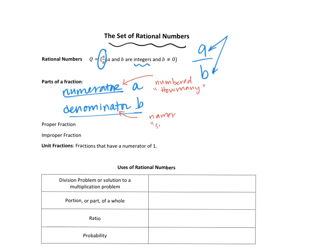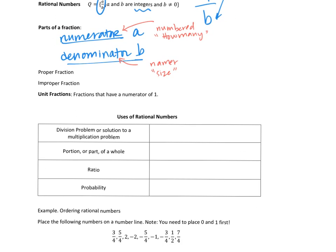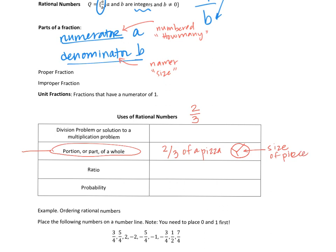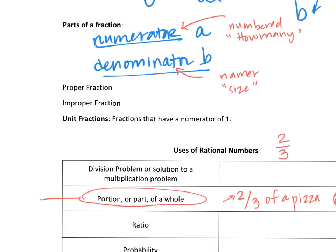The denominator is really telling us the size of our pieces, because we're going to talk about fractions in two different ways. One of them is as parts of a whole. So if we see the fraction two-thirds, we can see that as two-thirds of a pizza — the pizza is broken into three equal slices, each piece is one-third, and the two tells us how many pieces we have.